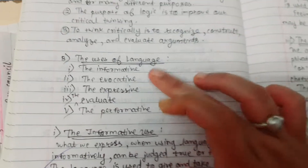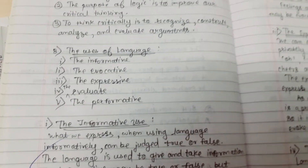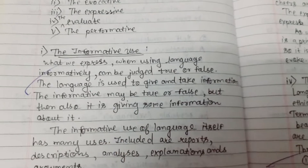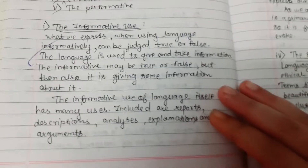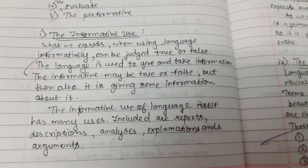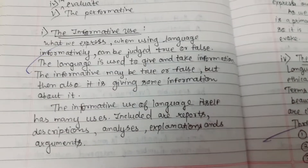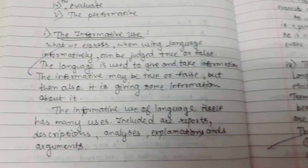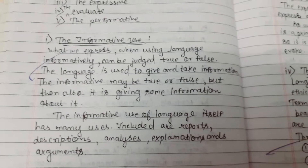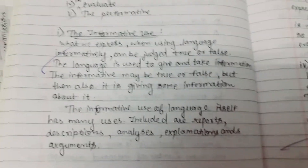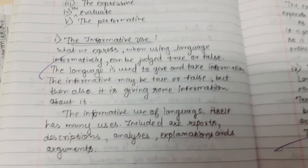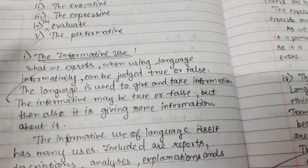The uses of language are: informative, evocative, expressive, evaluative, and performative. Informative means it gives information to us. When using language informatively, statements can be true or false. Language is used to give and take information. The informative use of language includes reports, descriptions, analysis, explanations, and arguments. The information given is not always perfectly 100% true or false, but it is giving information.